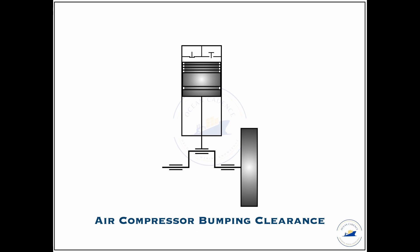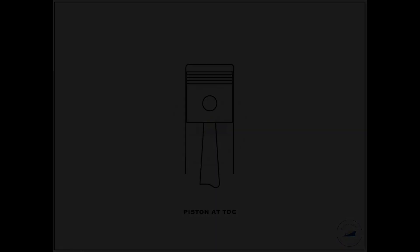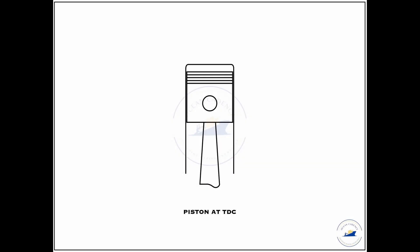First of all we would have to understand before the measurement of the bumping clearance, what is the significance of having this clearance, the increase or decrease in this clearance. The bumping clearance is defined as the clearance volume that is left between the piston when the piston is at TDC and the cylinder head.